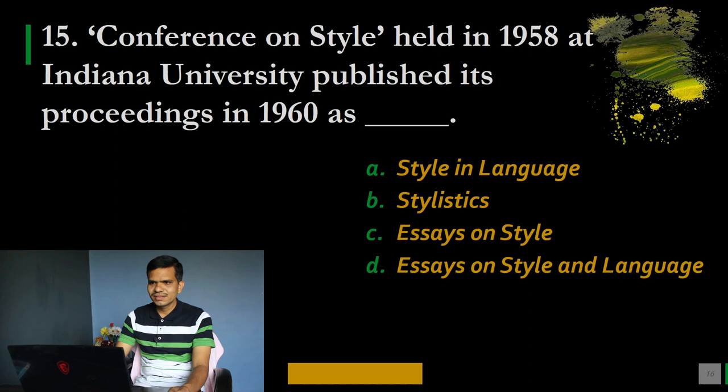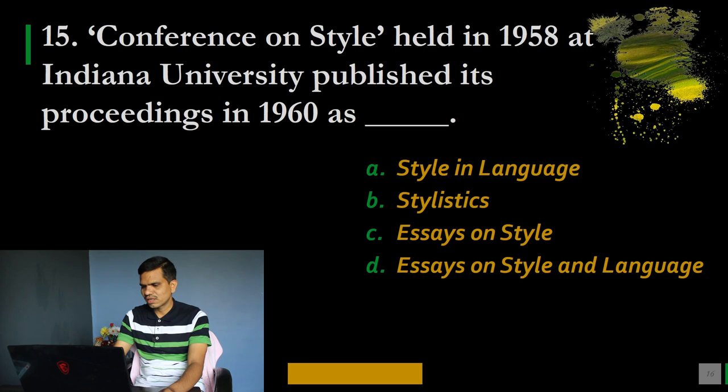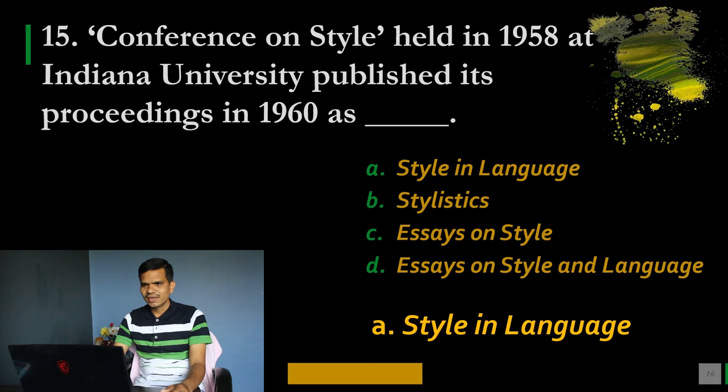Question number 15: The Conference on Style held in 1958 at Indiana University published its proceedings in 1960 as what? Options: A. Style in Language, B. Stylistics, C. Essays on Style, D. Essays on Style and Language. The correct option is A, Style in Language. Many scholars presented papers at this conference, and all those papers were collected under the title Style in Language.